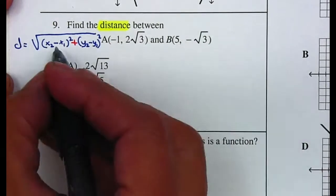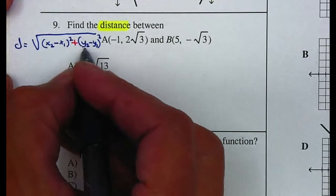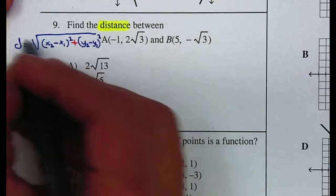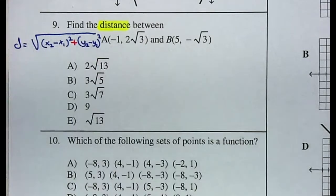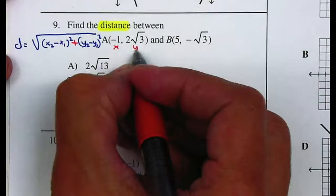So basically your difference between your x squared plus your difference between your y squared, and we're going to take the square root. This is your x1 and y1.